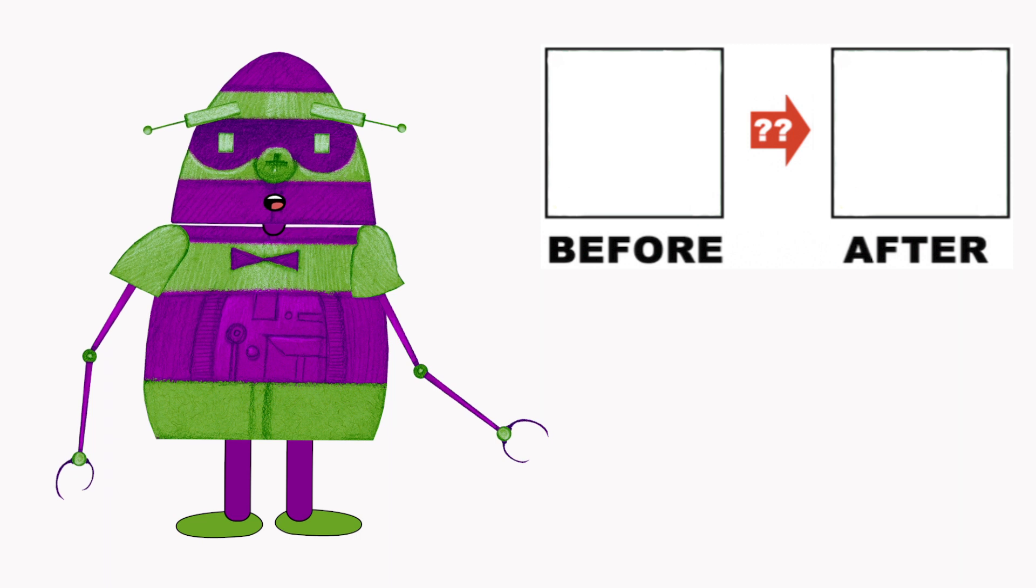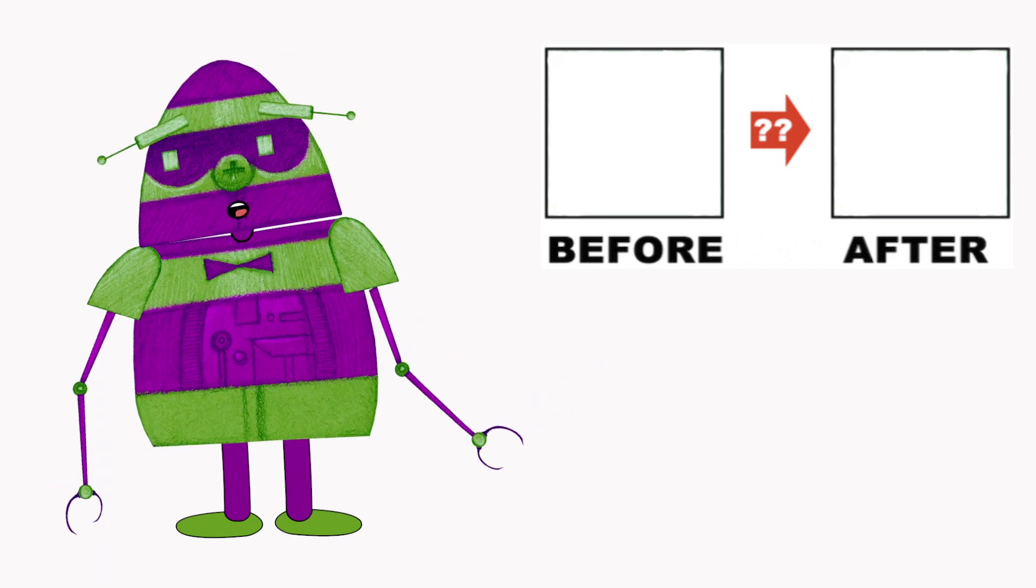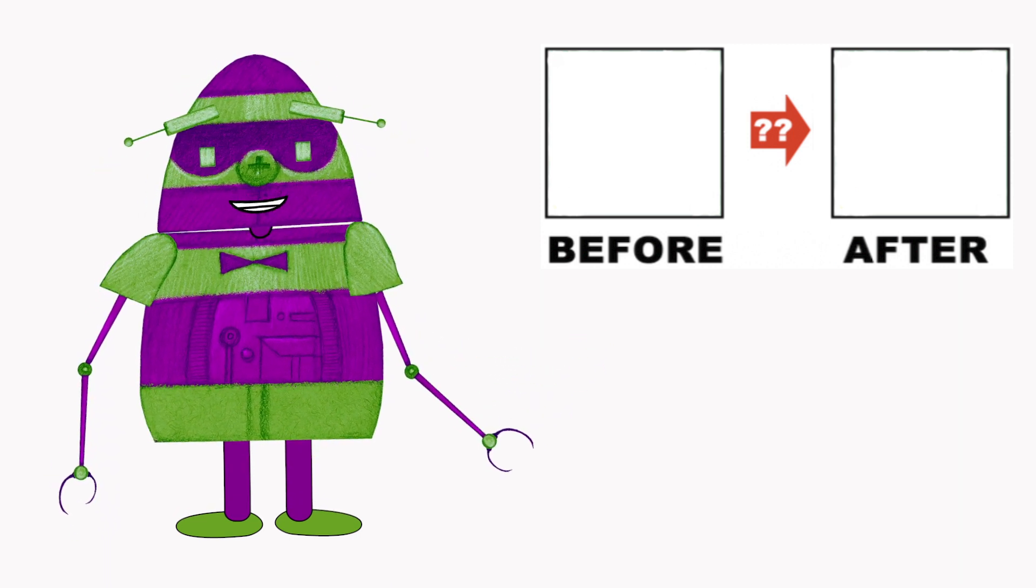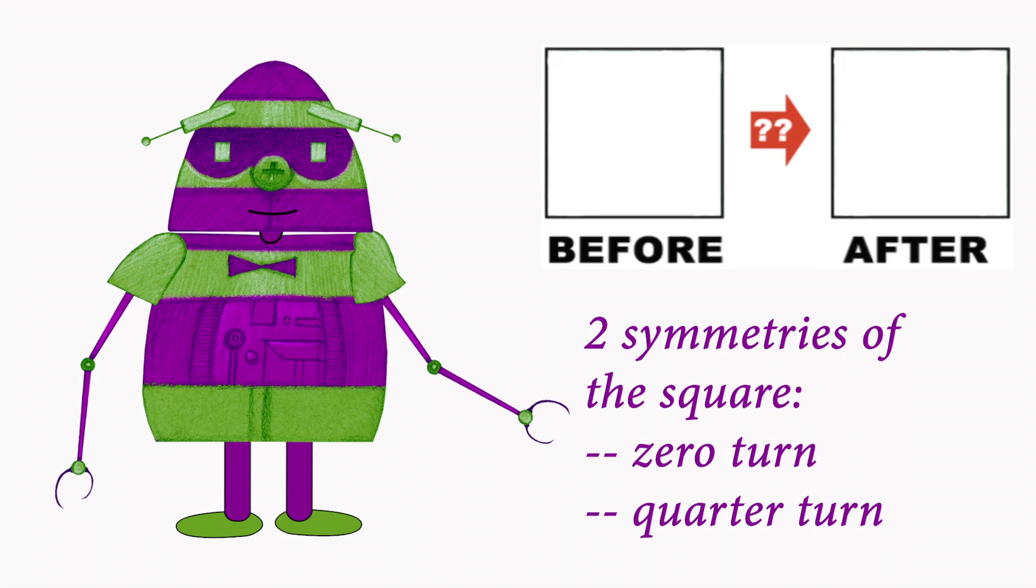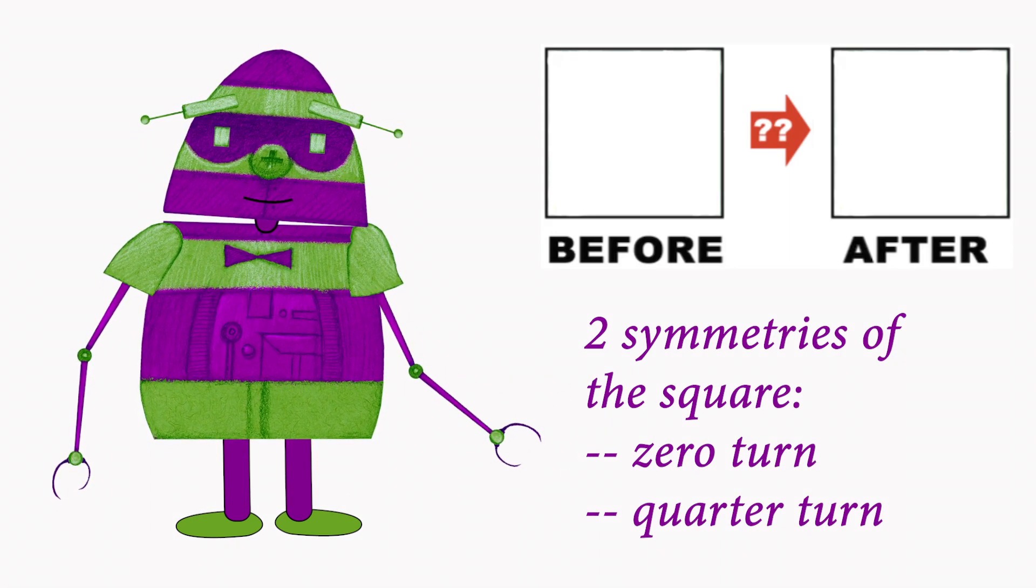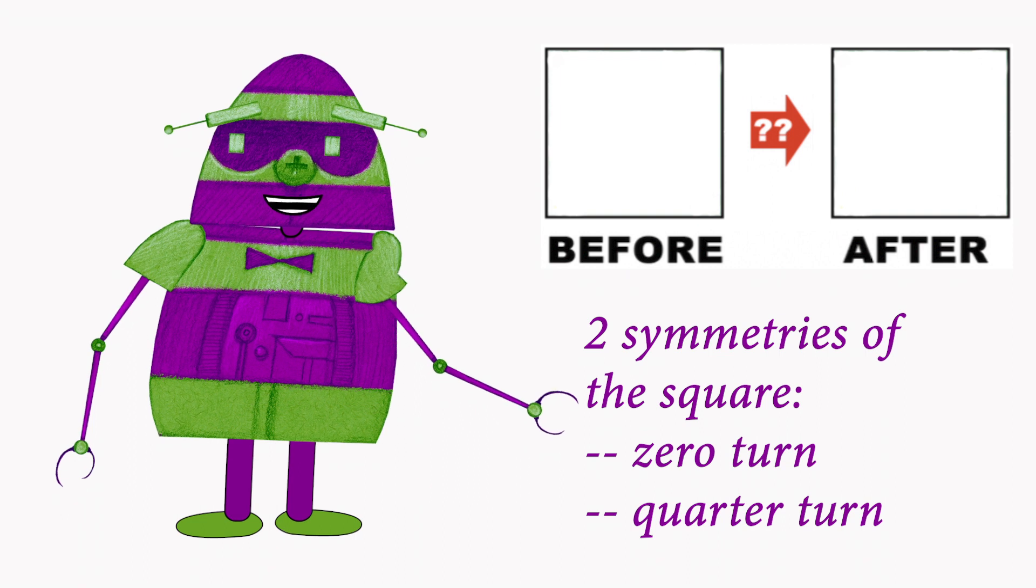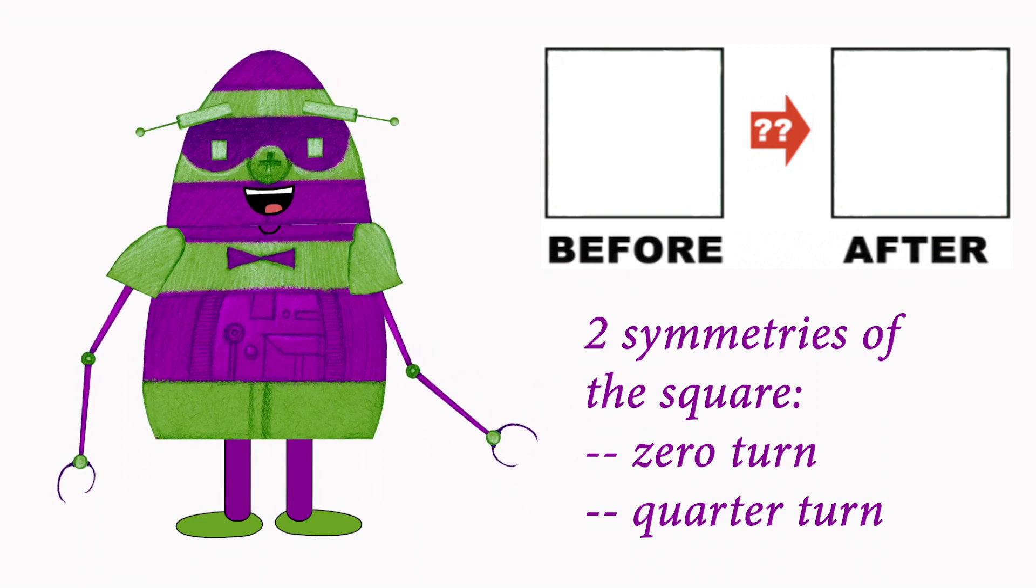The transformations of zero turn and a quarter turn leave the square looking unchanged. These are two of the rotation symmetries of the square. How many rotation symmetries does a square have?